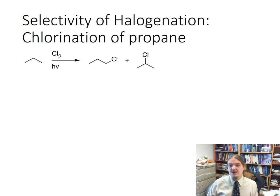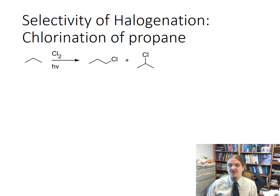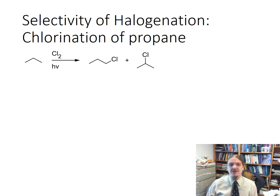In this video, I'm going to talk about the selectivity of radical halogenation. In the previous video, we used an example of radical chlorination and helped you figure out what the different kinds of products that can form from a particular hydrocarbon are. In this video, we're going to build up to figuring out which of those is the major product and what the product distribution might look like.